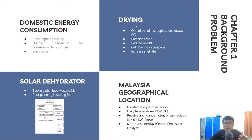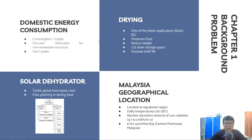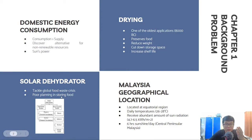Drying is one of the oldest applications of solar energy, making use of solar radiation for food preservation. It helps in reducing the weight of the product, cutting down storage space, and increasing the shelf life so it can be stored for a longer time. The increasing world population tends to increase food demand and leads to rising global food waste. Waste caused by poor planning in food storing can be categorized as avoidable waste, and solar dehydrators seem to be an ideal solution.